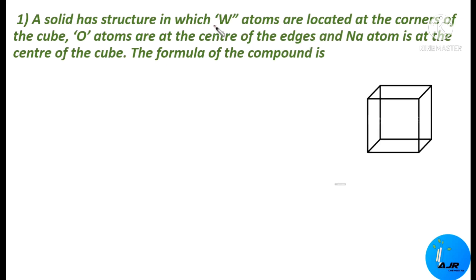W (tungsten) atoms are located at the corners of the cube. There are eight corners, so we have tungsten at all eight corners. Oxygen atoms are present at the center of the edges. There are 12 edges — edge one, two, three, four, five, six, seven, eight, nine, ten, eleven, and twelve. So 12 edges are there.